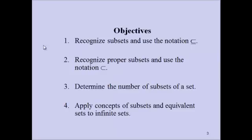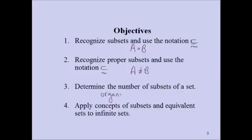Alright, welcome to 2.2. We're going to talk about subsets in a slightly shorter video. We're going to cover the objectives: recognize subsets and use the subset notation — you'll notice the little equal-to bar at the bottom, meaning A can actually be equal to B. We'll also recognize proper subsets and use the proper subset notation, which lacks that bar, so A cannot equal B. We also want to determine the number of subsets of a set, and apply concepts of subsets and equivalent sets to infinite sets, with a short discussion about Georg Cantor.